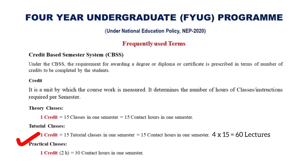In case of practical classes, one credit is equivalent to 30 contact hours in one semester. That means if there are two credits in a practical class, then you will have 60 hours of practical class in a semester.